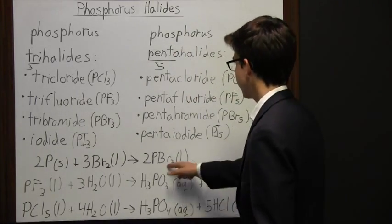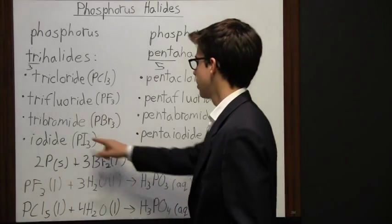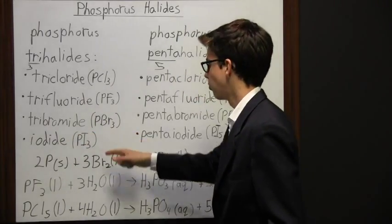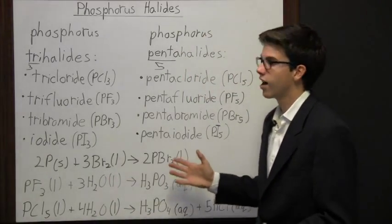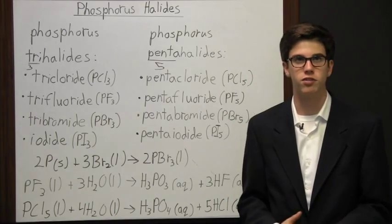Right here you notice that this would be tribromide, and it's two moles of tribromide. That's how we're making these halides, how we're coming up with these phosphorus halides.